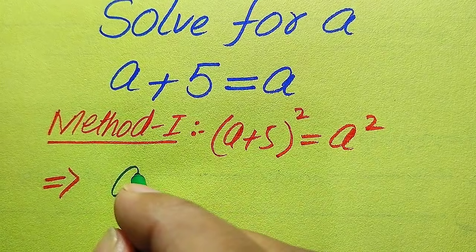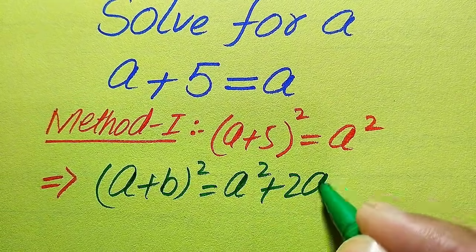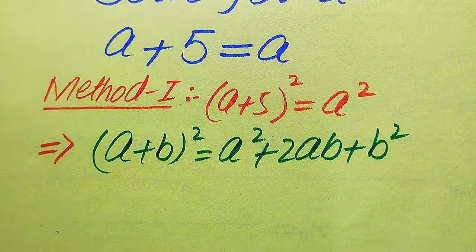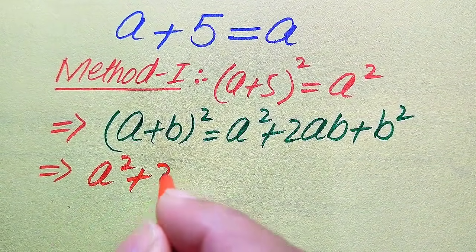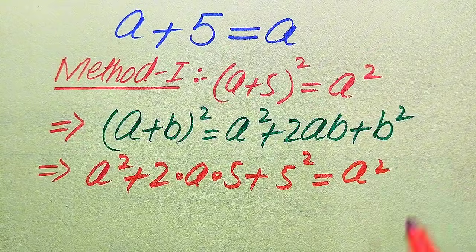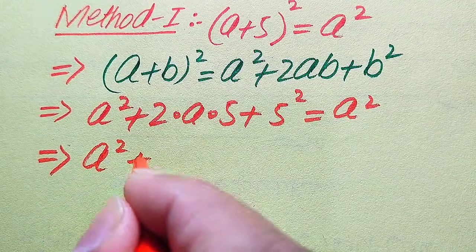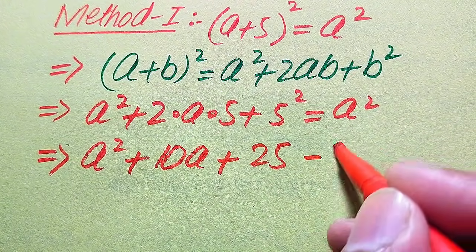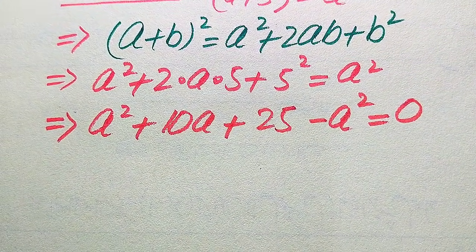We use the algebraic formula: (a + b)² = a² + 2ab + b². Applying this to the left-hand side, we get a² + 2(a)(5) + 5² = a², which simplifies to a² + 10a + 25 = a². We then move the a² from the right-hand side to the left, giving us a² + 10a + 25 − a² = 0.